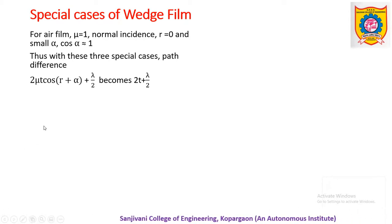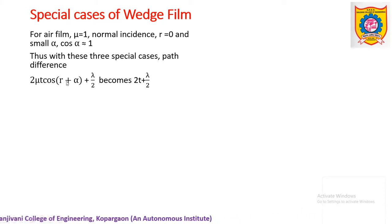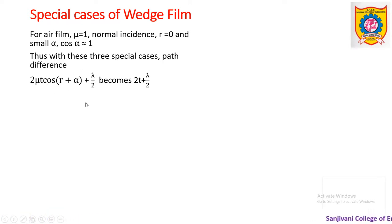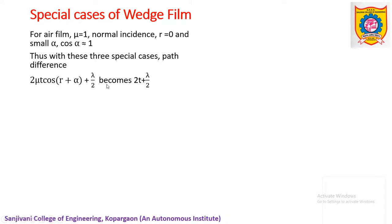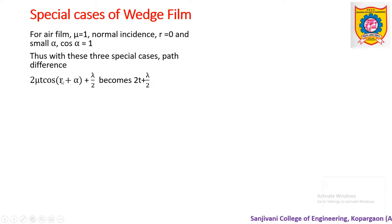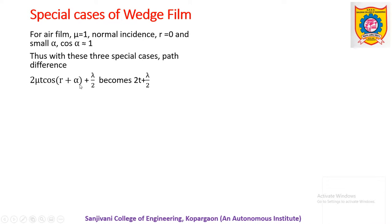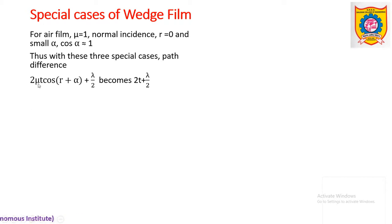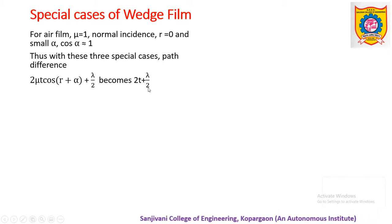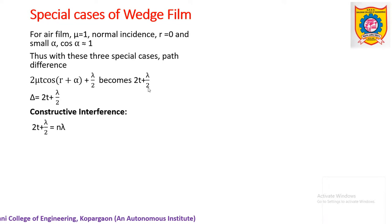The path difference for wedge film in reflected light is 2μt·cos(r+α) + λ/2. After applying all three special cases — μ = 1 for air film, r = 0 for normal incidence, and cos(α) → 1 for small α — this path difference simplifies to 2t + λ/2. From this simplified path difference we can easily obtain conditions of constructive as well as destructive interference.